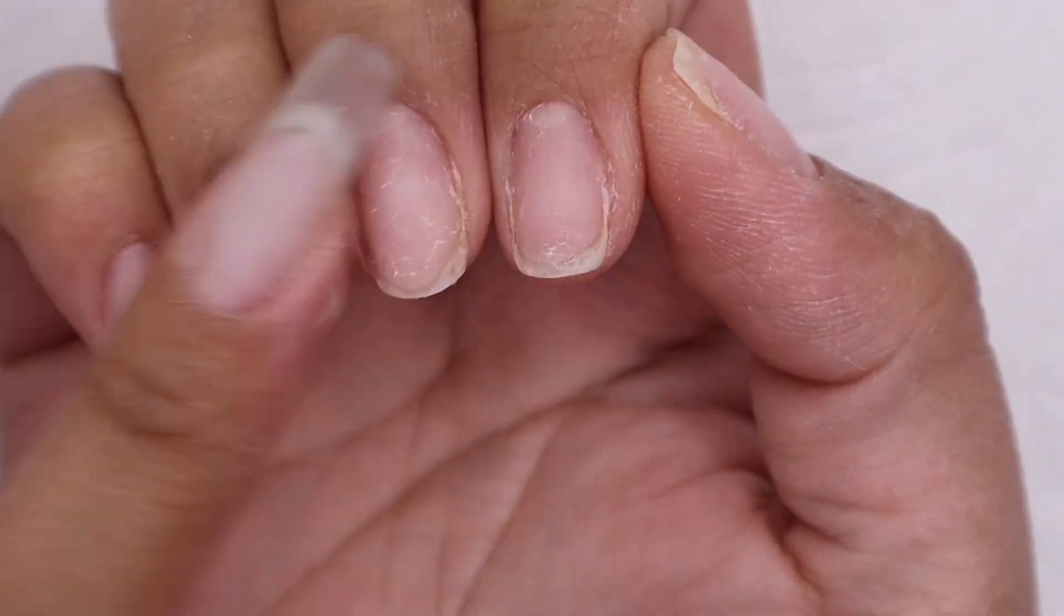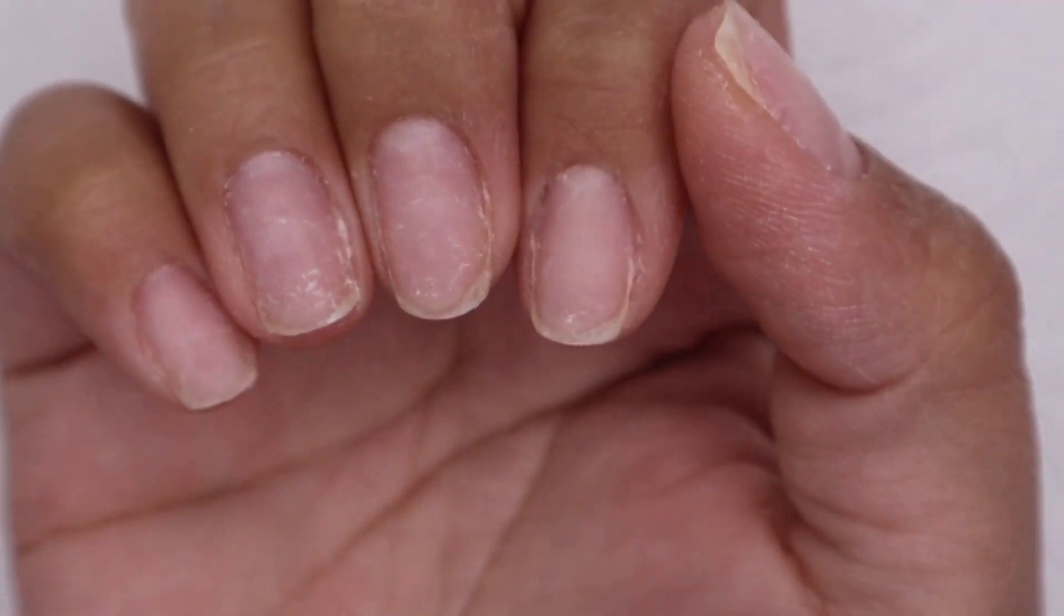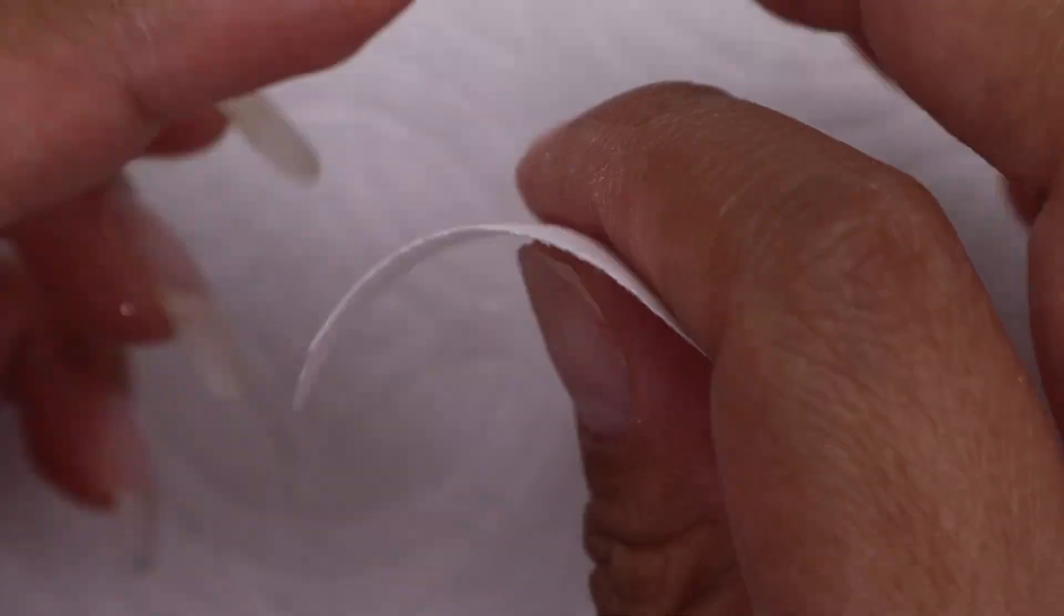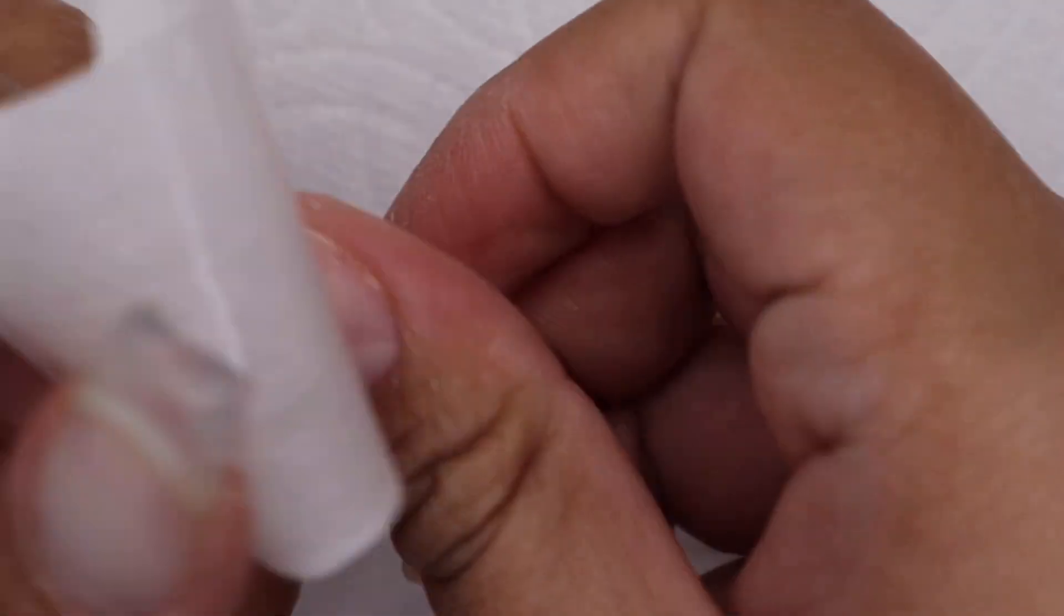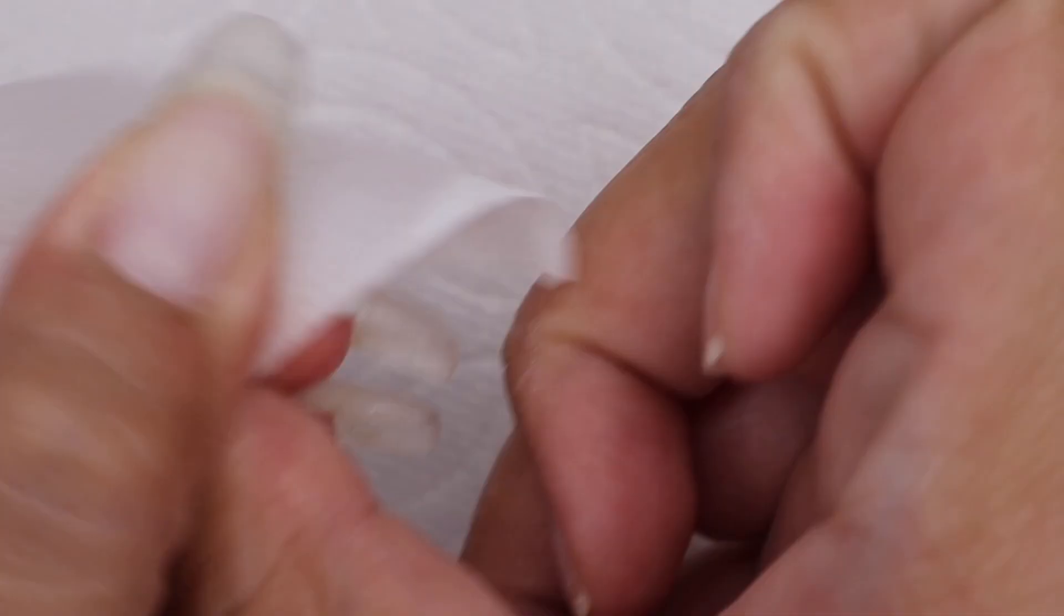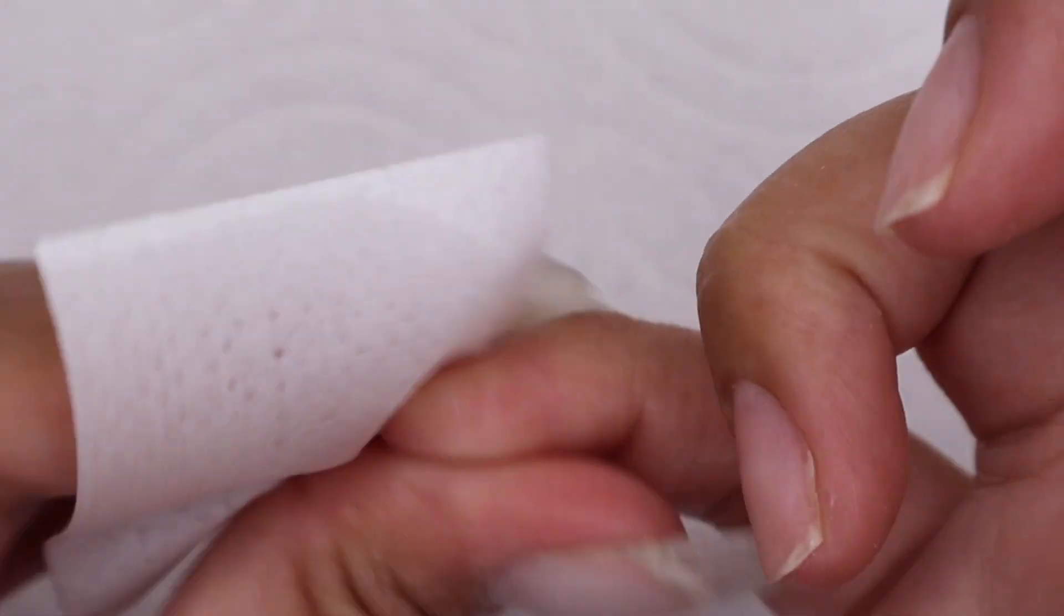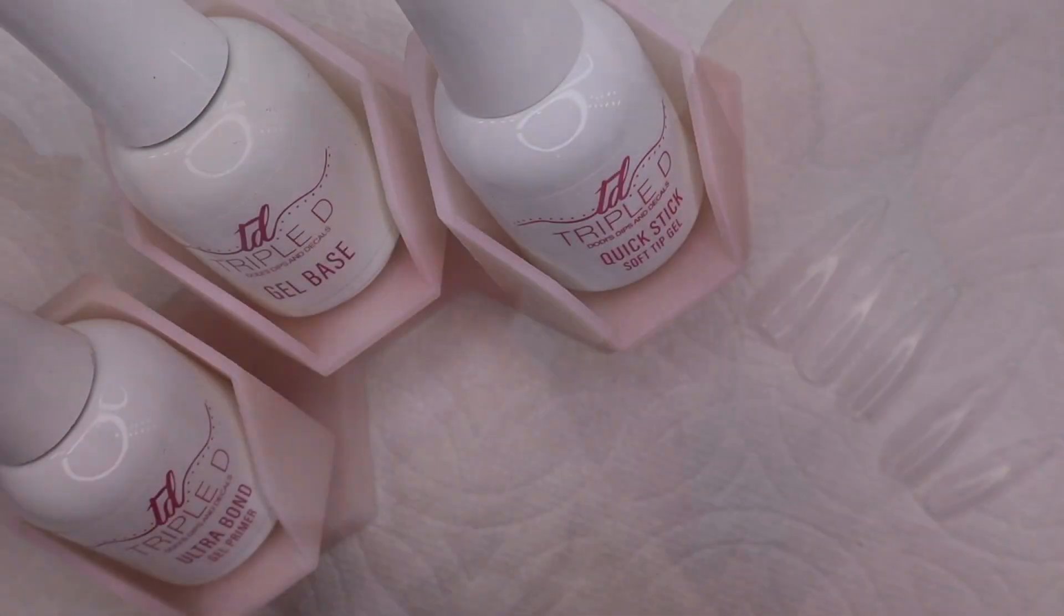Now I am going to prep my nails. I already cleaned and pushed back my cuticles, but I am going to dehydrate it further using some alcohol. Natural nails are also lightly buffed to make it a little bit rough.